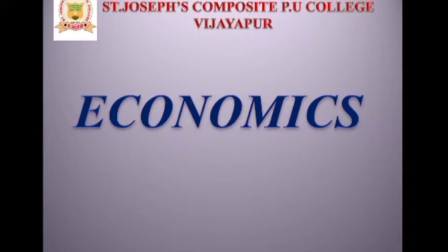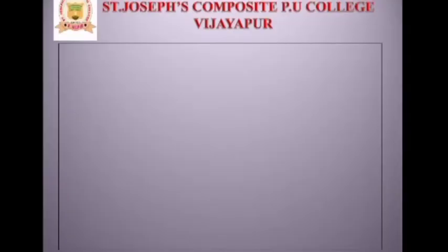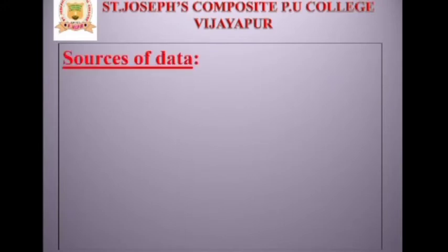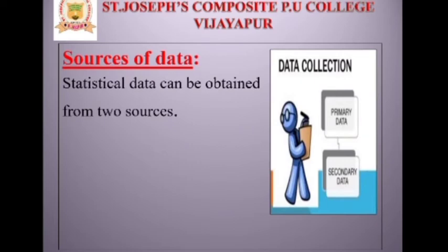Today, in this session, we are going to deal with a new concept: sources of data. What are the sources of data for collection of data? Statistical data can be obtained from mainly two sources — primary data and secondary data. So these are the two sources of statistics.